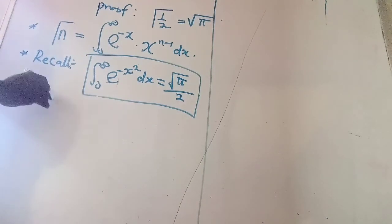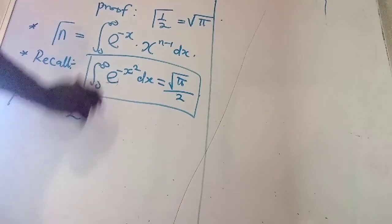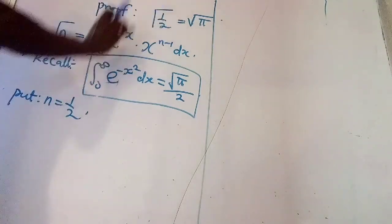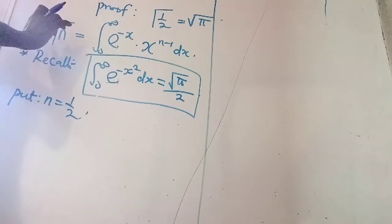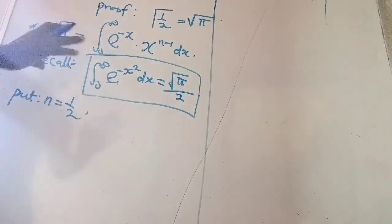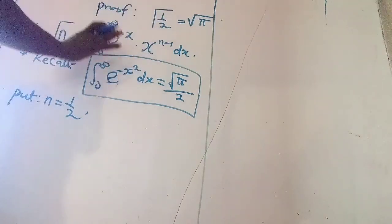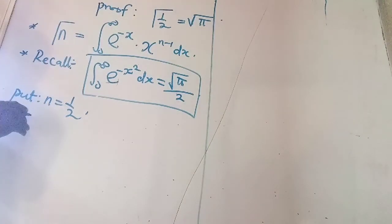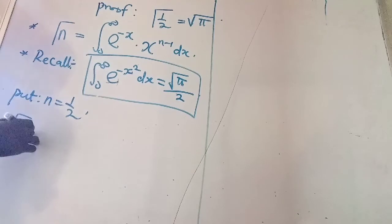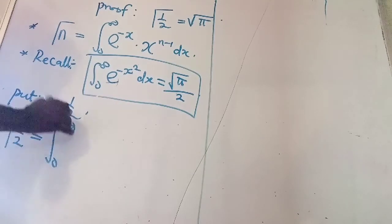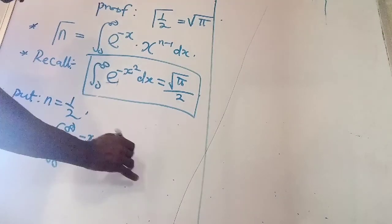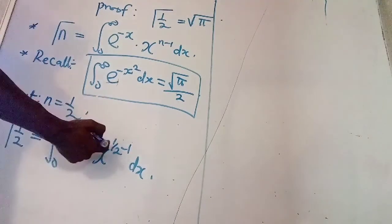Put n equals to half. Since the formula here is for gamma of n and I want to prove gamma of half, so I am using half to replace n. Therefore, anywhere I see n in the formula for the gamma, I will replace with 1 over 2. Therefore, I have gamma of 1 over 2 equals to integral from 0 to infinity e to negative x, x raised to power half minus 1 dx.